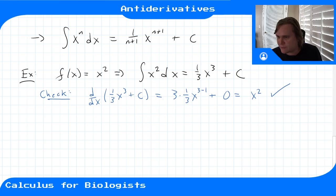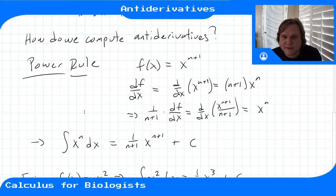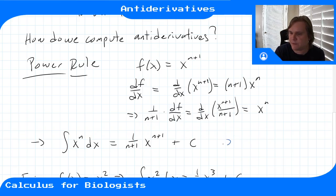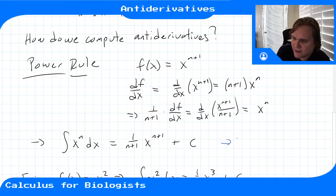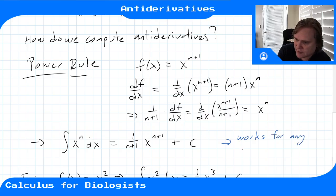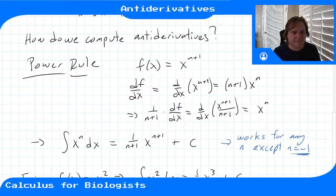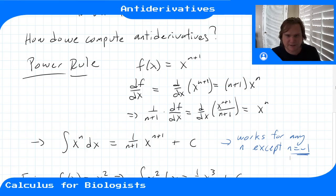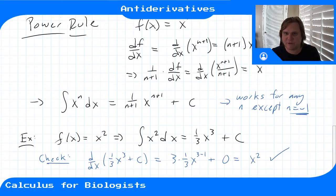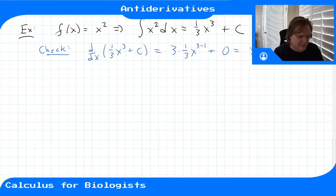The power rule works for any n except n = -1, because that would give 1/(n+1) = 1/0, which is undefined. The case n = -1 is a special case we'll deal with separately.